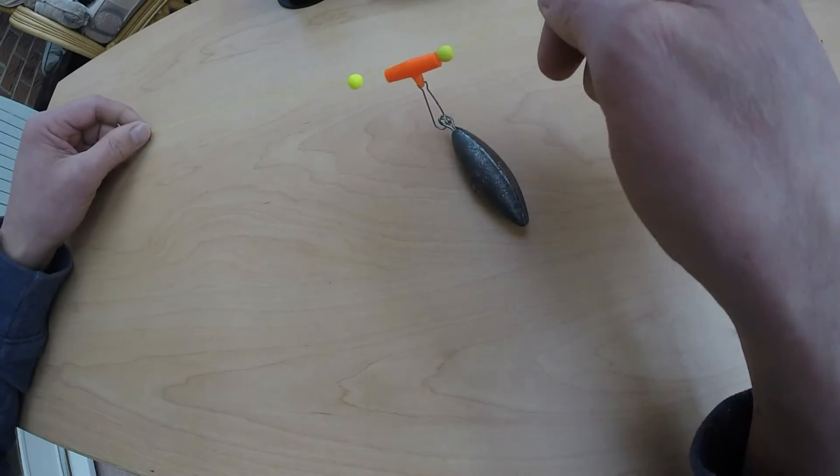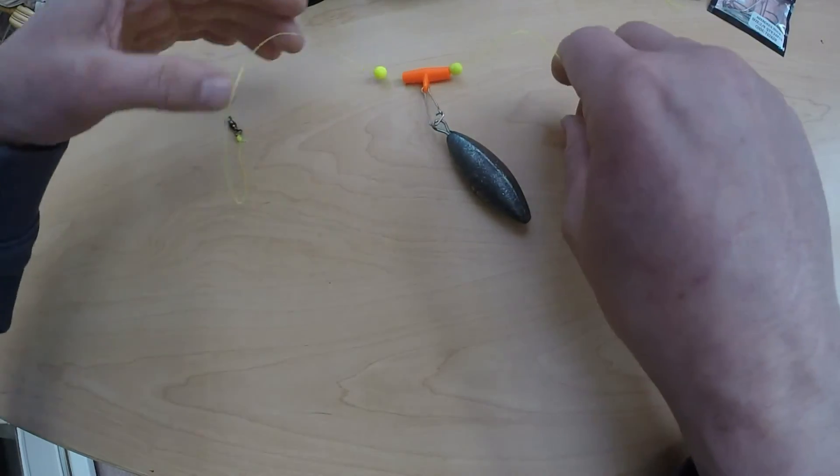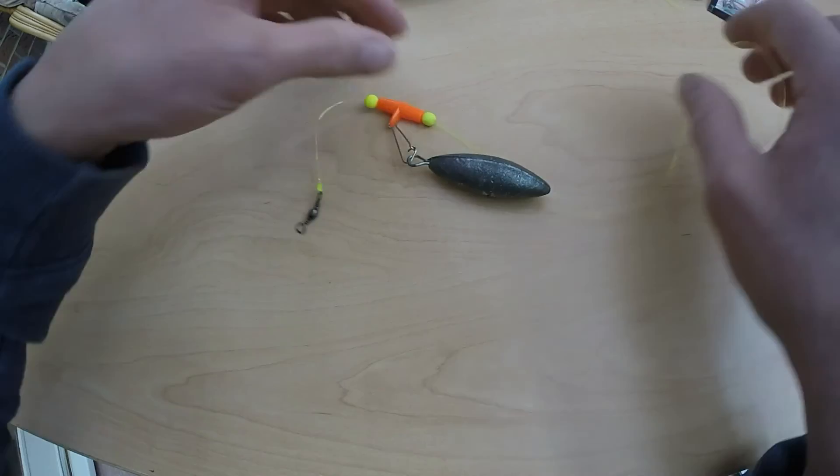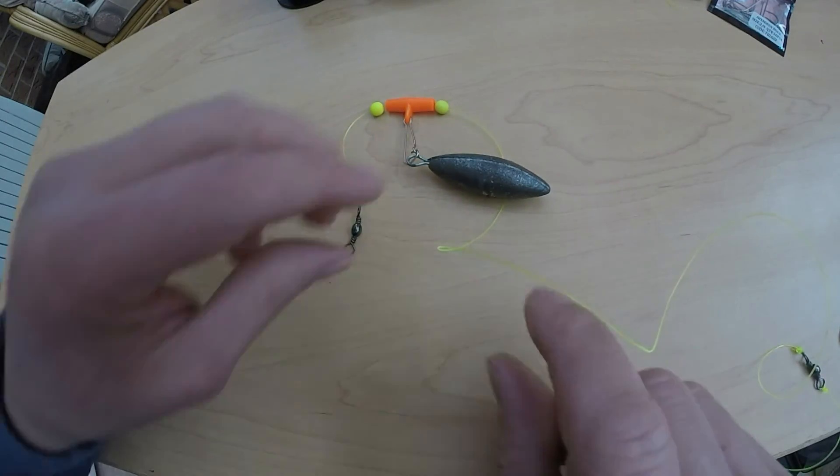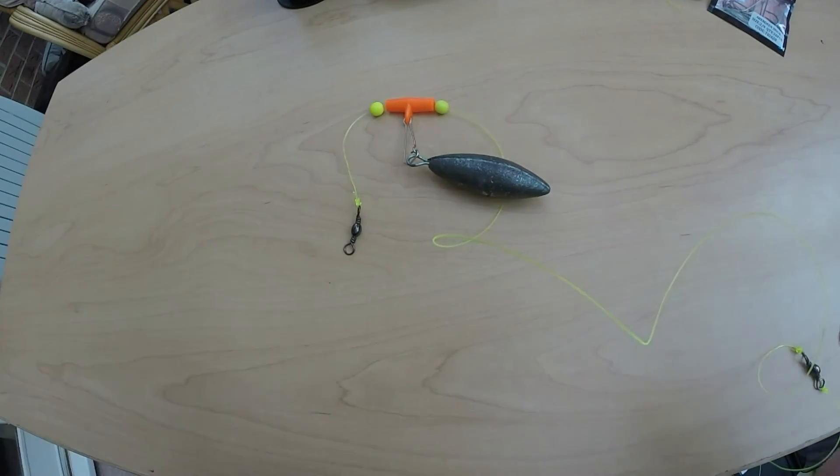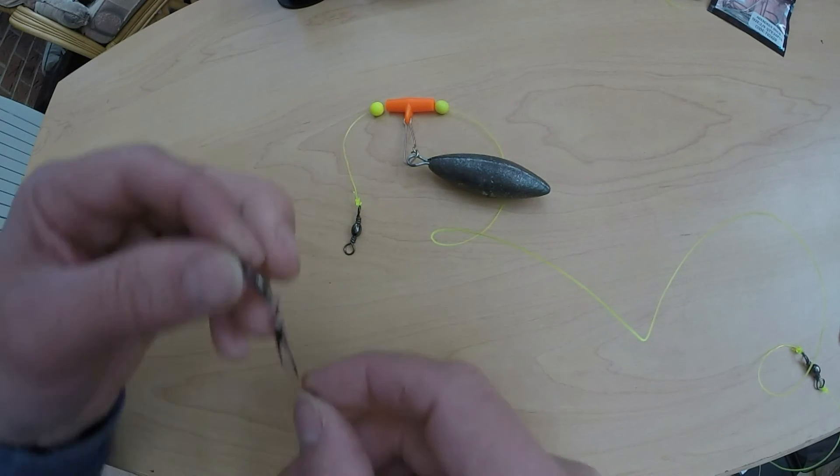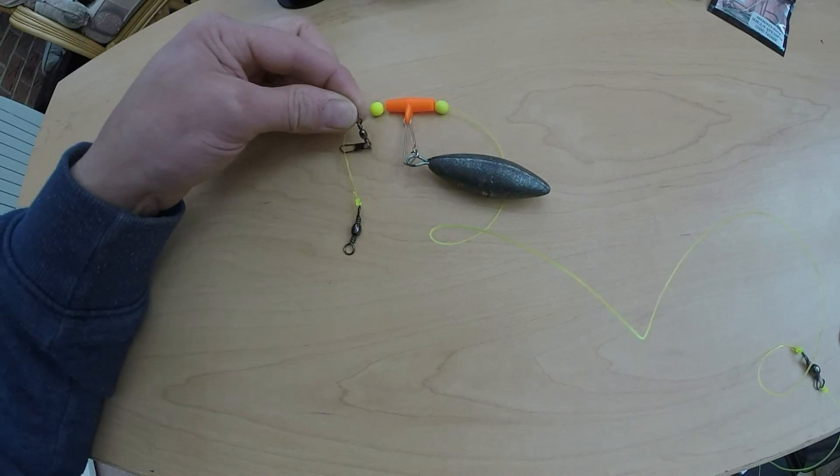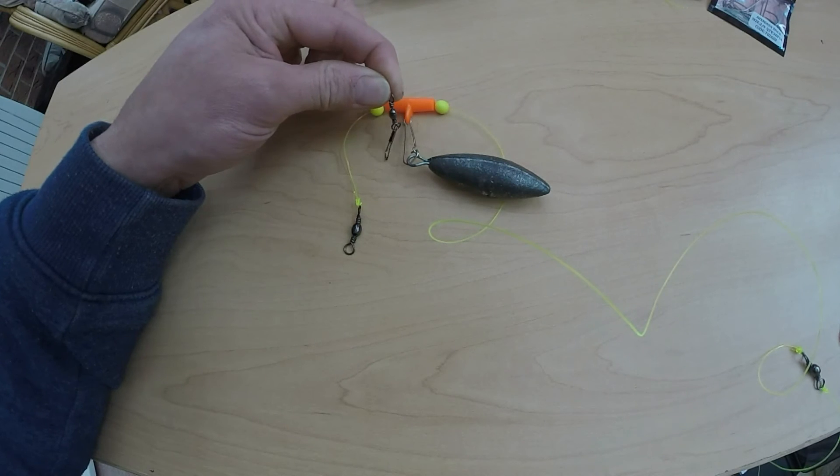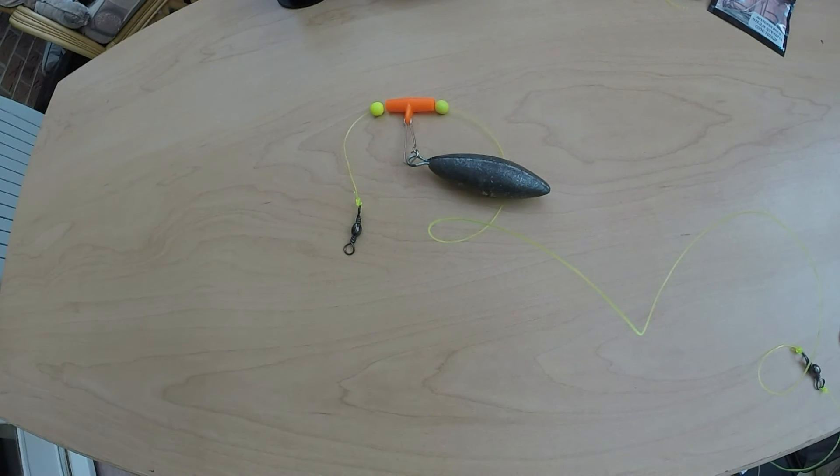So, you can see that, that's how it works. Simple rig to make. If you don't have a sliding boom, you can also use a snap lock swivel and put that on instead to clip your weight to, but I tend to use a sliding boom, a lot easier.